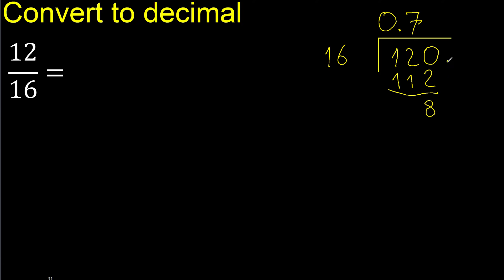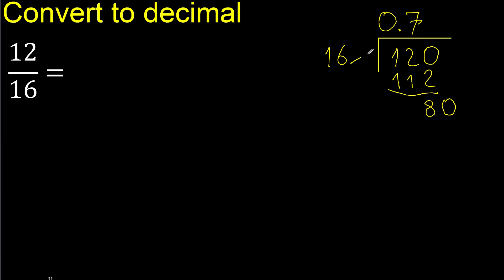There is no number that goes down, therefore complete — always complete with 0. Point only once. Now we have 80 over 16.